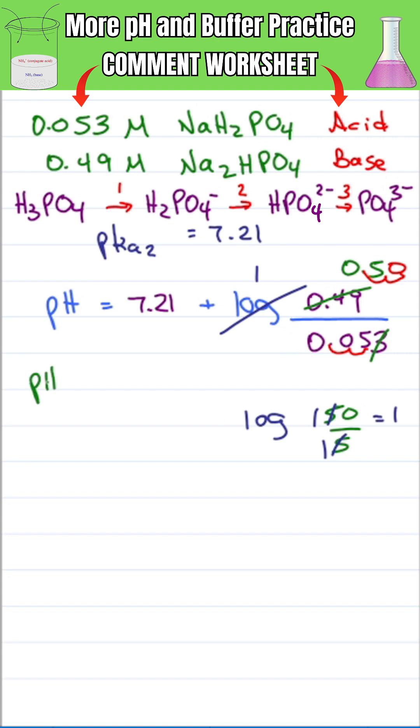This gives me a pH of 7.21 plus 1, which equals 8.21. Simple enough, but an even faster way is to use the estimation that pH equals pKa plus a correction factor.